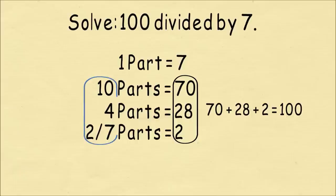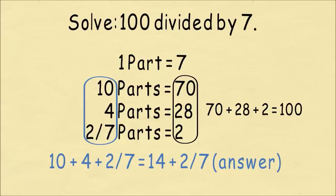To get our quotient, we add up the number of parts. We have 10 parts, 4 parts, and 2 seventh parts, which gets us to our answer of 14 and 2 sevenths.